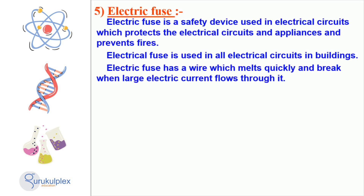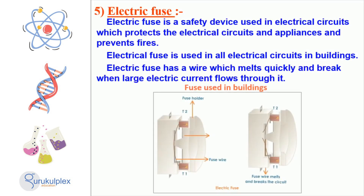An essential safety device used in electrical circuits is the electric fuse, which works by melting a wire that quickly breaks when a large electric current flows through it, thus protecting buildings and their inhabitants from danger. Installing electric fuses in all electrical circuits is important for the safety of those living in buildings.